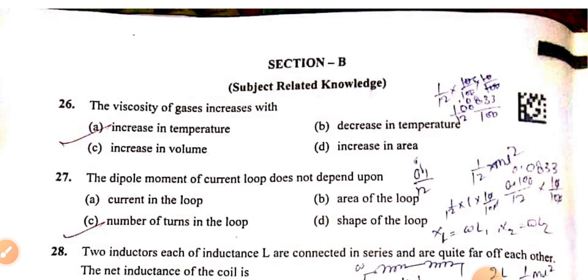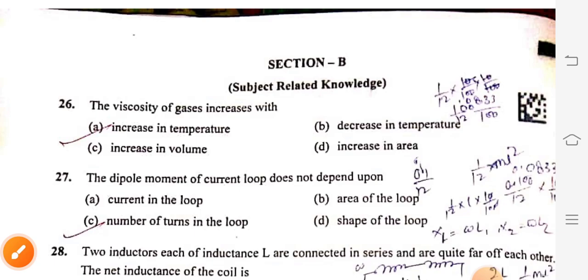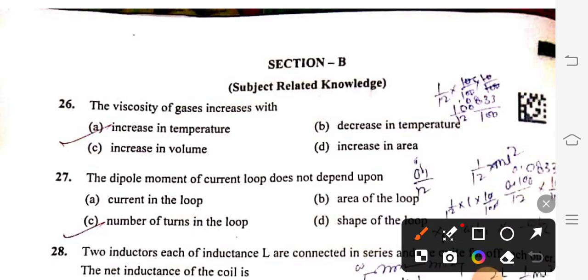First question is, the viscosity of gases increases with, the right option is option A. Next, the dipole moment of current loop does not depend upon the shape of loop, option D.